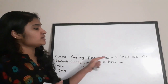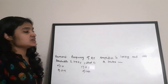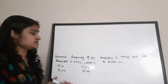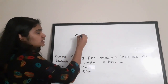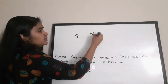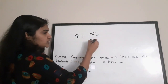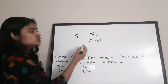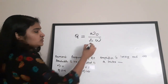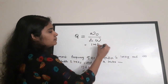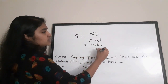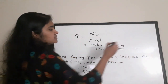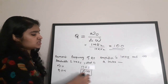Resonance frequency of an RF amplifier is 1 MHz and its bandwidth is 10 kHz. What is the quality factor? The equation for quality factor Q = resonant frequency / bandwidth = F0 / ΔF. Substituting: Q = 1 MHz / 10 kHz = 100. So the correct answer for the quality factor Q is 100. Correct answer is option D.